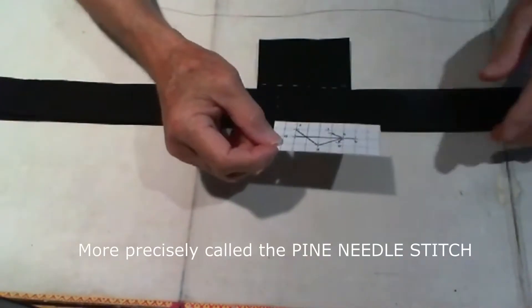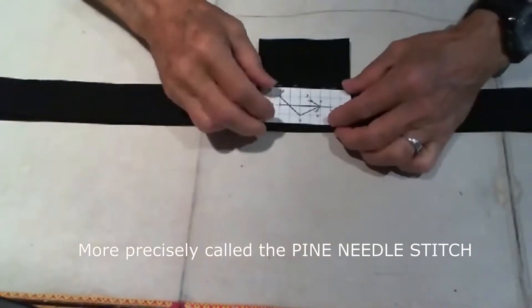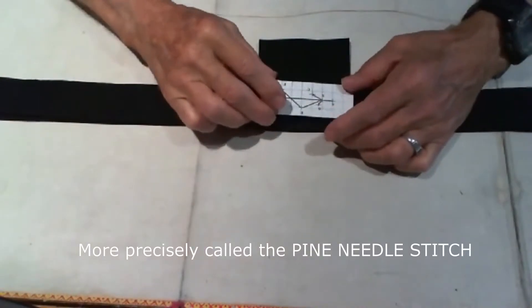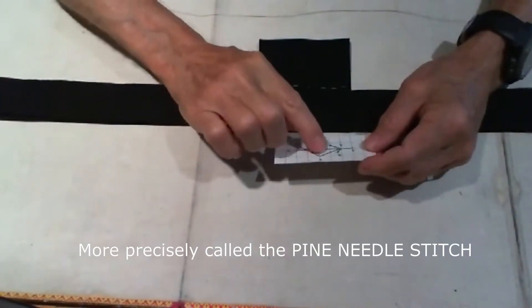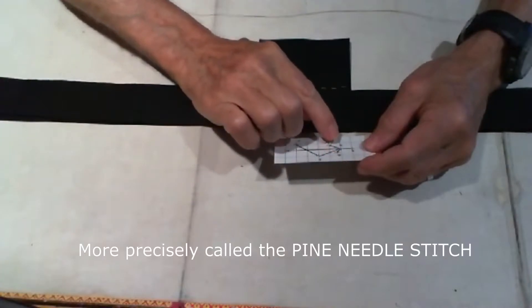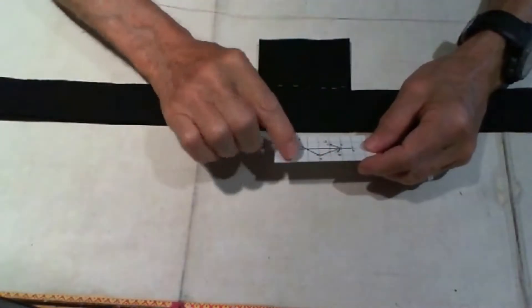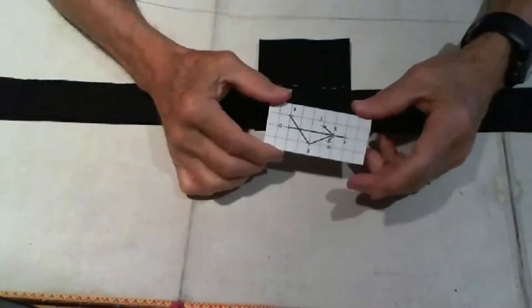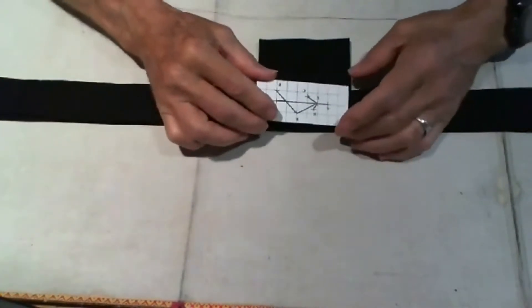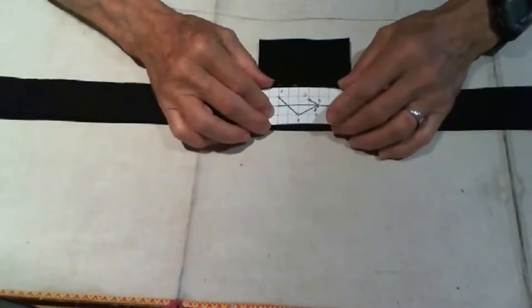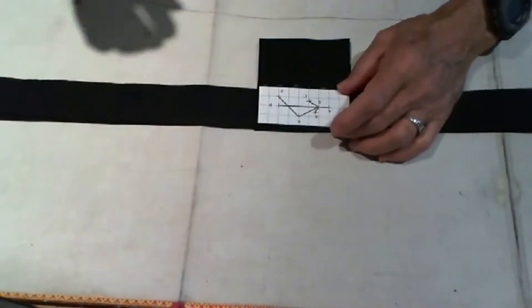First of all, we've punched holes neatly at the various places on this template, and then the template is placed right on this portion of the neck piece.